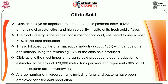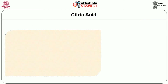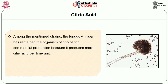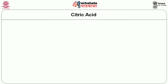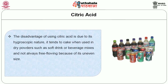A large number of microorganisms including fungi and bacteria have been employed for citric acid production. Among the mentioned strains, the fungus Aspergillus niger has remained the organism of choice for commercial production because it produces more citric acid per unit time. Citric acid can also be produced by chemical synthesis, although the cost is much higher than with fermentation. The disadvantage of using citric acid is due to its hygroscopic nature — it tends to cake when used in dry powders such as soft drink or beverage mixes and is not always free-flowing because of its uneven size.